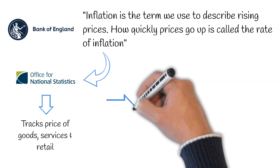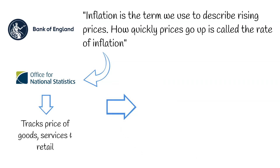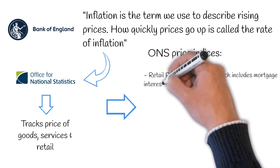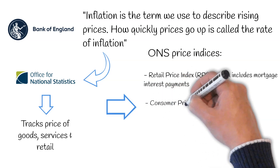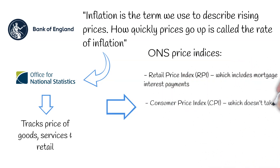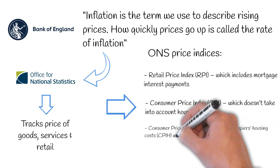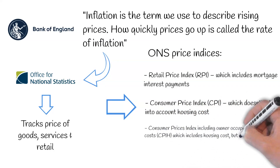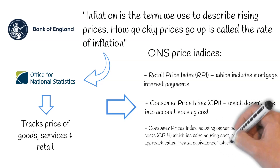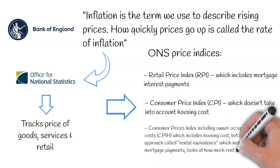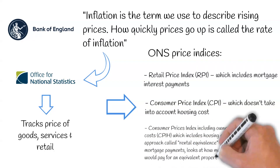These are then published through a price index. Common price indices produced by the ONS include the Retail Price Index, or RPI for short, which includes mortgage interest payments; the Consumer Price Index, or CPI for short, which doesn't take into account housing costs; and the Consumer Prices Index Including Owner-Occupier's Housing Costs, or CPIH for short, which includes housing costs but uses an approach called rental equivalents — looking at how much rent the householder would pay for an equivalent property instead of mortgage payments.